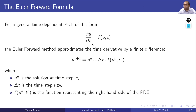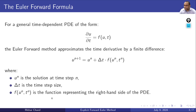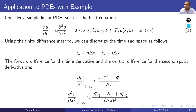Here we have the general dependent partial differential equation of the form: del u / del t = f(u, t). The Euler forward method approximates the time derivative by finite difference: u^(n+1) = u^n + delta_t * f(u^n, t^n). On the right-hand side, u^n, t^n, and f(u^n, t^n) are all known functions, while on the left-hand side u^(n+1) is unknown. So u^(n+1) depends on the right-hand side, where u^n is the solution at time step n, delta_t is the time-step size, and f(u^n, t^n) is the function representing the right-hand side of the PDE.